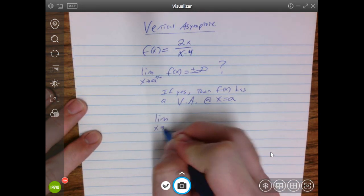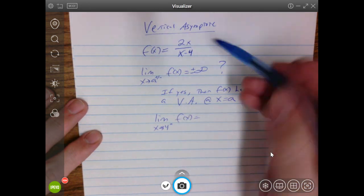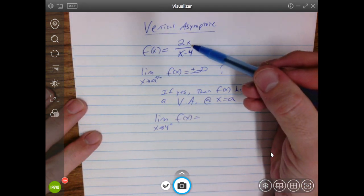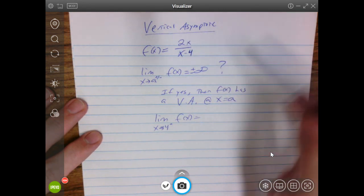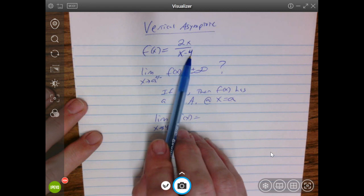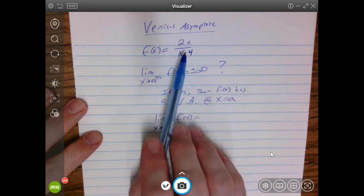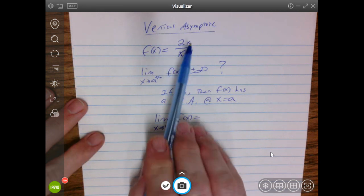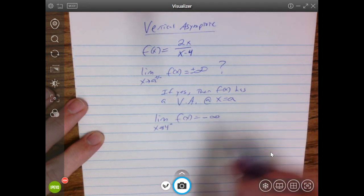The limit as x approaches 4 from the left, let's just check one side first, of f of x. If I look at this equation, as x approaches 4 from the left, the numerator is approaching 8, right, a little less than 8, but still 8. The denominator, if x is approaching 4 from the left, that's a number just slightly smaller than 4. So if I subtract 4, I'm going to get a really, really tiny negative number. If I divide a positive by a negative, I'm going to get negative. And if I divide 8 by really, really small numbers, smaller and smaller, this is going off to infinity. So this limit is actually negative infinity.